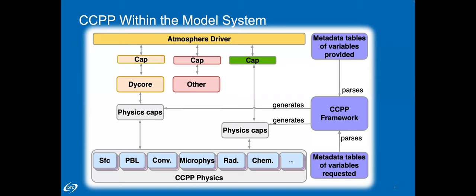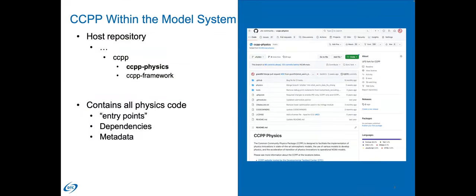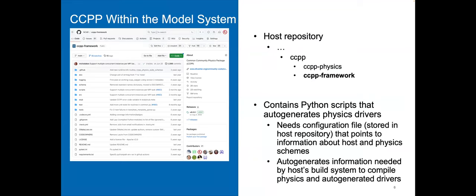The CCPP must also be given a description of the physics suite, or multiple suites, for which to construct these caps. From an organizational point of view, the CCPP is split into two different Git repositories, both housed on GitHub. The first contains the actual physics parameterization routines, their interfaces to the CCPP, and all dependencies. For NOAA models, this exists as a Git submodule underneath the FV3 DICOR. The second repository houses the CCPP framework — scripts and tools that form a generalized software framework for connecting physics parameterizations with a host, designed to be model-agnostic with development shared across several institutions.